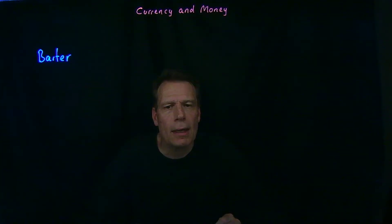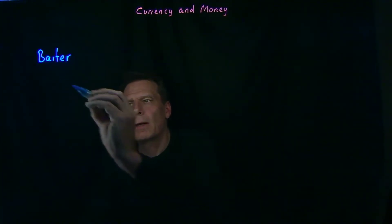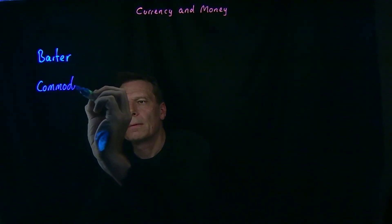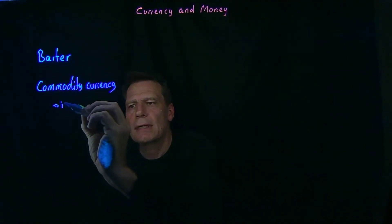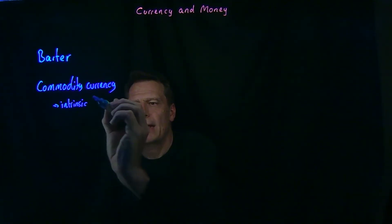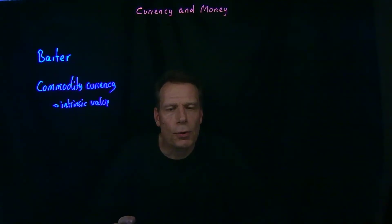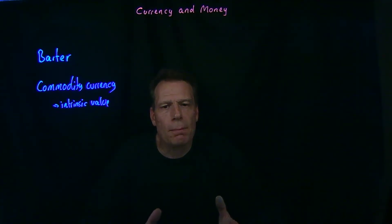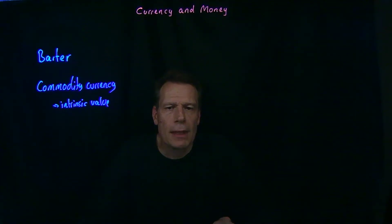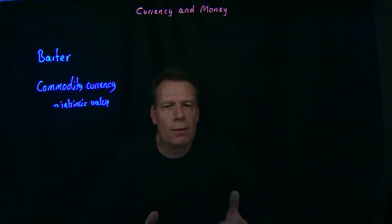They're no longer a barter economy — they now have an economy based on what we call a commodity currency. A commodity currency has intrinsic value. The value of a gold coin is determined by how much gold is in the coin, how much it weighs. You can melt that coin and create jewelry, decorate your clothes, or even make teeth. Throughout history there have been different kinds of commodity currency — gold, silver, bronze, or copper. In small economies like prisons, even cigarettes have served as currency.